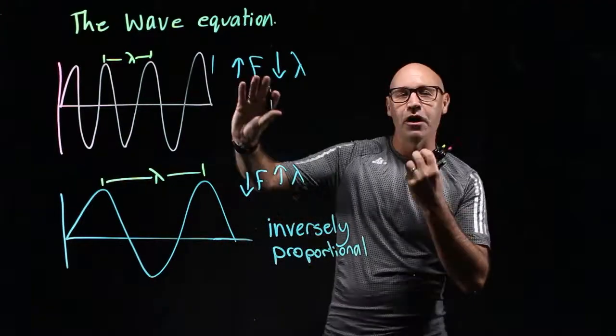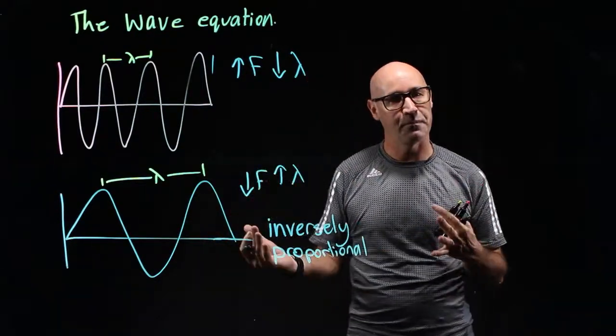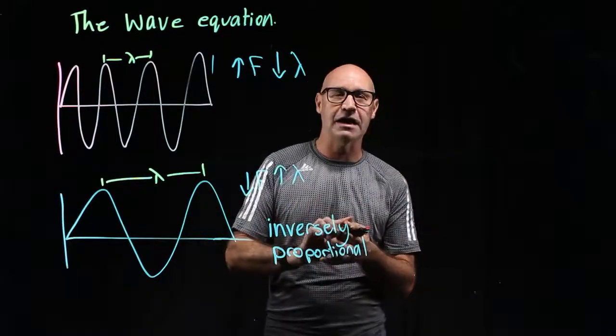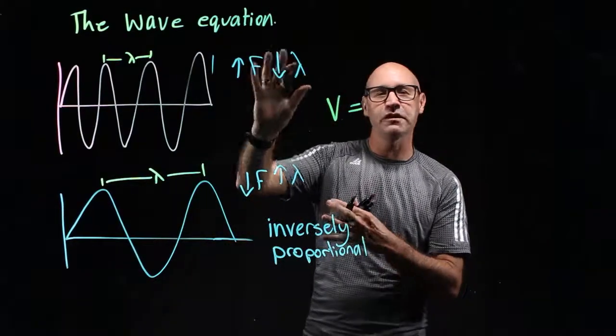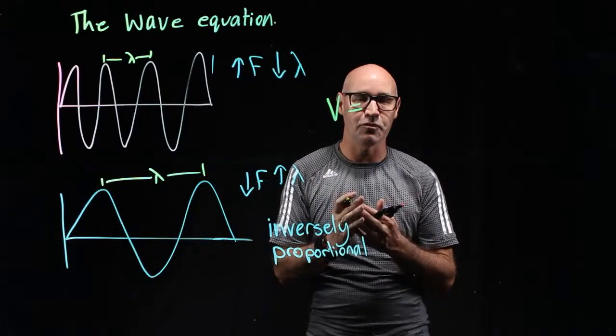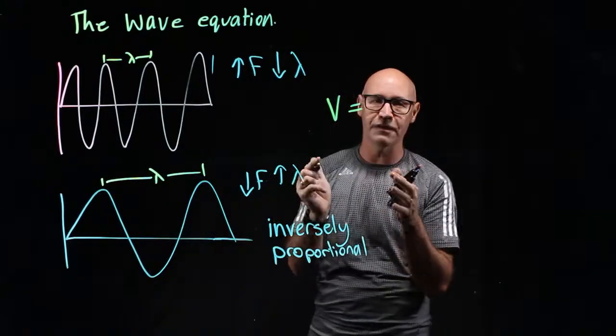If these are both sound waves travelling through the same medium at the same temperature, they have got the same speed. So frequency and wavelength are inversely proportional. So we're able to put them into an equation called the wave equation.